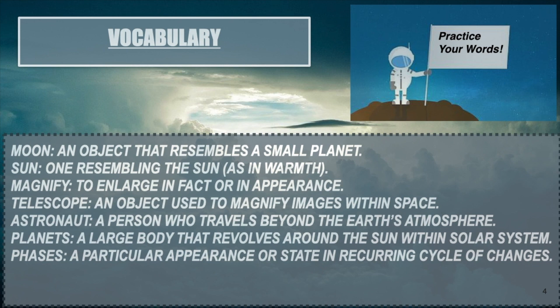An astronaut is a person who travels beyond the Earth's atmosphere — above the clouds. This is somebody who ventures out into space, goes to different planets, and sees if there's different life or resources that we can bring back to Earth. Planets are large bodies that revolve around the sun within our solar system. Our solar system consists of eight planets and they all revolve around the sun every day. And our last vocabulary word is phases. A phase is a particular appearance or state in which an object cycles — when something cycles through a certain number of changes, that's just a different phase.